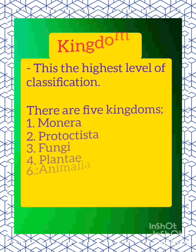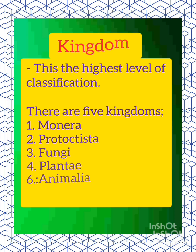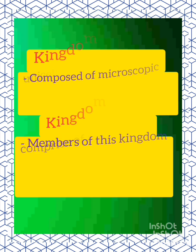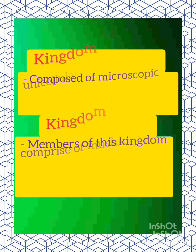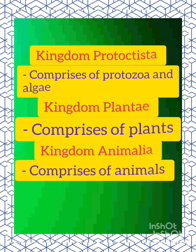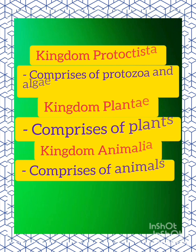Kingdom is the highest level of classification. There are five kingdoms: Monera, Protoctista, Fungi, Plantae and Animalia. Kingdom Monera is composed of microscopic unicellular organisms, mainly bacteria. Kingdom Fungi includes mushrooms, toadstools, molds and yeast. Kingdom Protoctista comprises protozoa and algae. Kingdom Plantae comprises plants, while kingdom Animalia comprises all animals, both vertebrates and invertebrates.